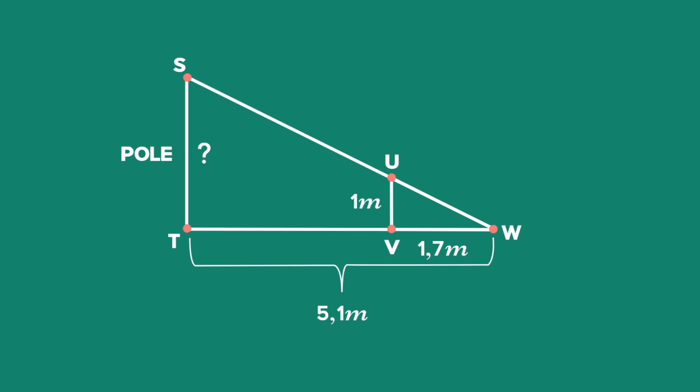We mark the given information on the diagram and see that to find the height of the telephone pole, we need to prove that triangle STW is similar to triangle UVW.